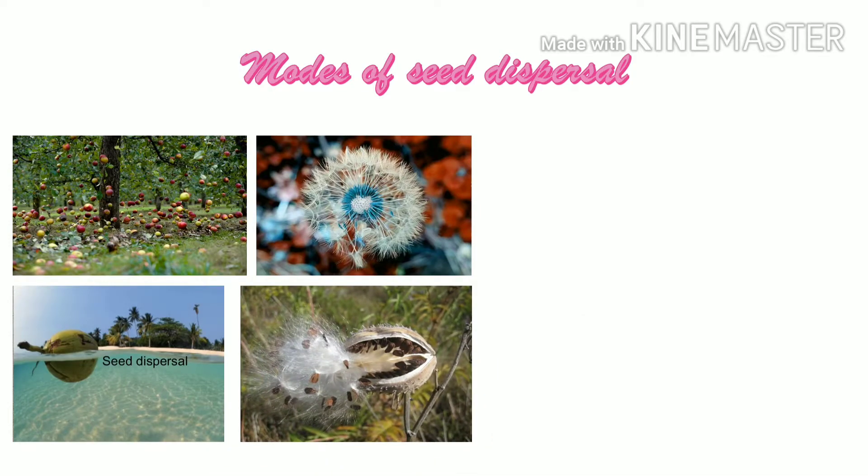Dispersal by explosion. The fruits of some plants such as peas and beans burst open when they are ripe, scattering the seeds in all directions. This method of seed dispersal is called ballistic dispersal, or dispersal by explosion.